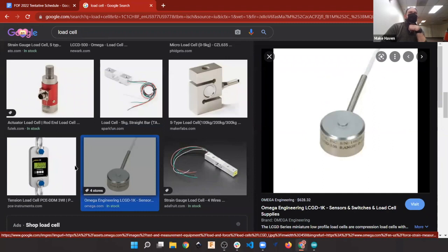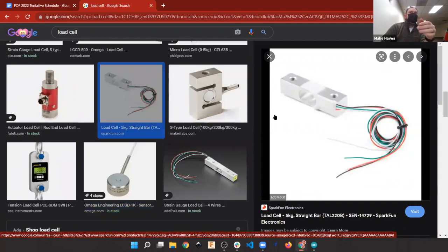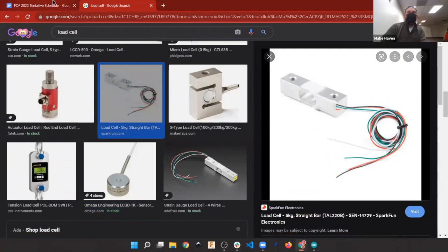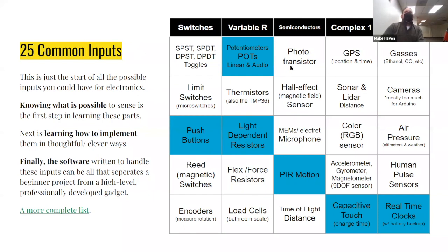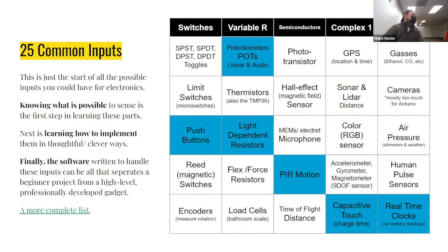Load cells are tricky — once you crack the code they're very useful. They're different from force resistors: force resistors change their resistance directly and the change is large enough that the microcontroller can directly observe it. Load cells have a much more subtle change requiring extra amplification. For cases where you don't expect much weight — like in a VR glove — a force resistor is perfect since your fingers won't generate a lot of force.